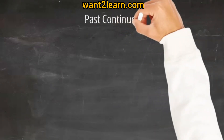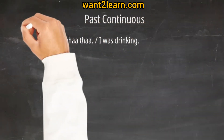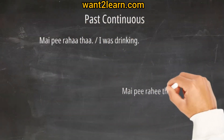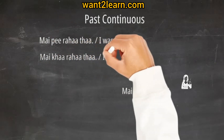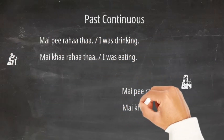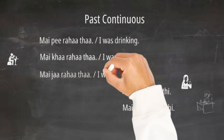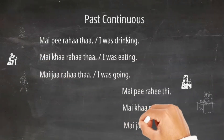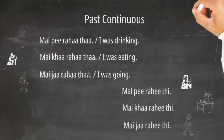Past continuous. I was drinking: Mein piti rahi tha. Mein piti rahi thi. I was eating: Mein khaa rahi tha. Mein khaa rahi thi. I was going: Mein jaua rahi tha. Mein jaua rahi thi.